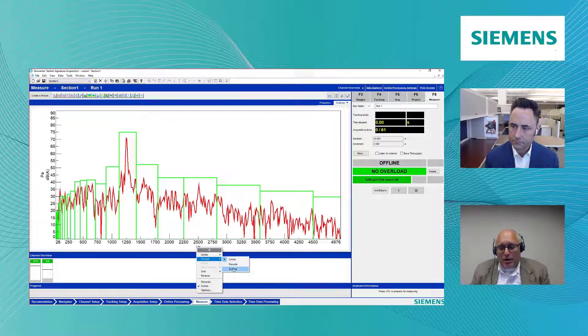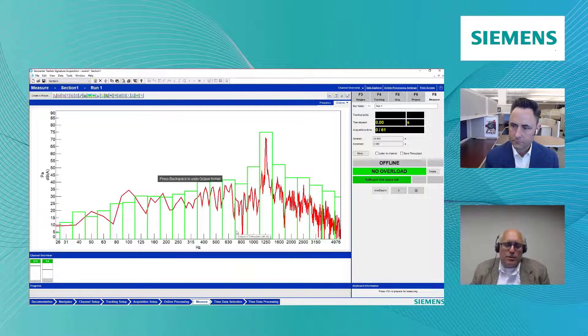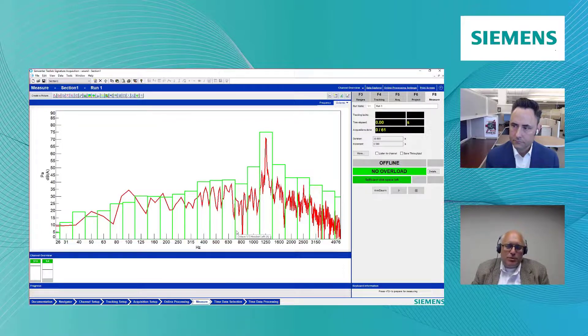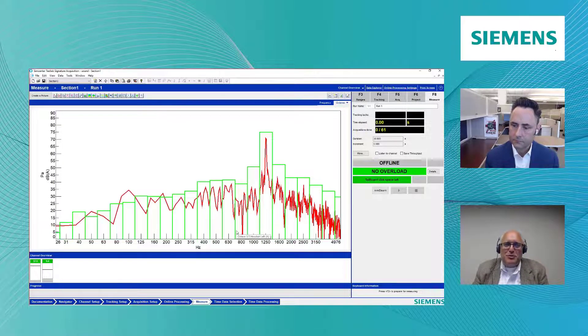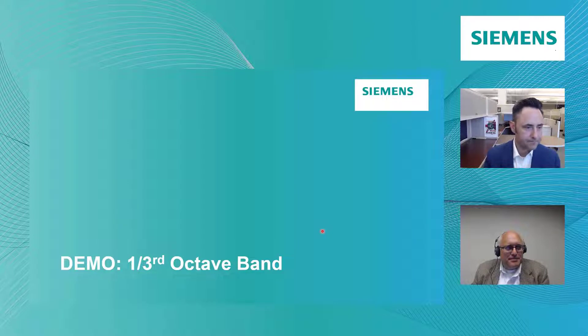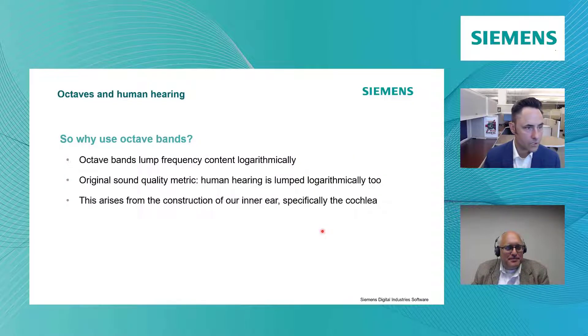But this is really what's going on behind the scenes. And again, really, our ear hears more like this. So that's probably because we're lumping together those chunks of sound. So why do we use these octave bands?